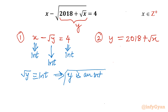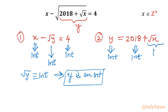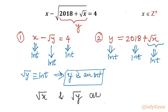Now come to equation number 2. Since y is an integer and 2018 is already an integer, we can conclude that √x must also be an integer. So the final statement of this discussion is that both √x and √y are integers.